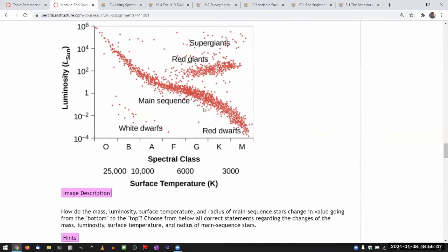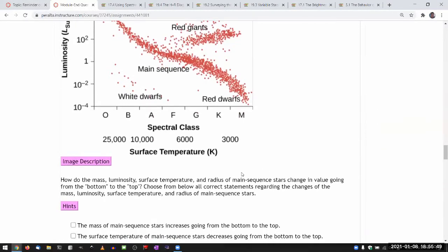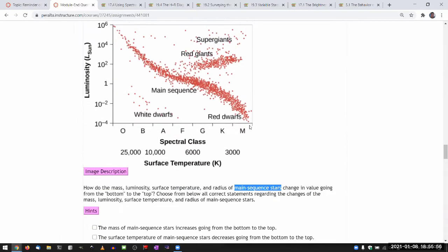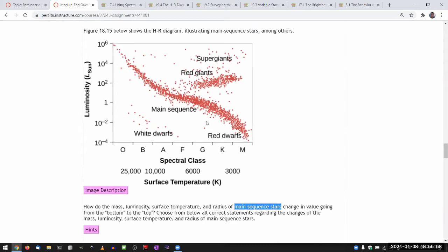Now, when you answer this question, it's important to recognize that you are answering only for the main sequence stars. So what characterizes main sequence is basically this line here, the downward sloping line here.